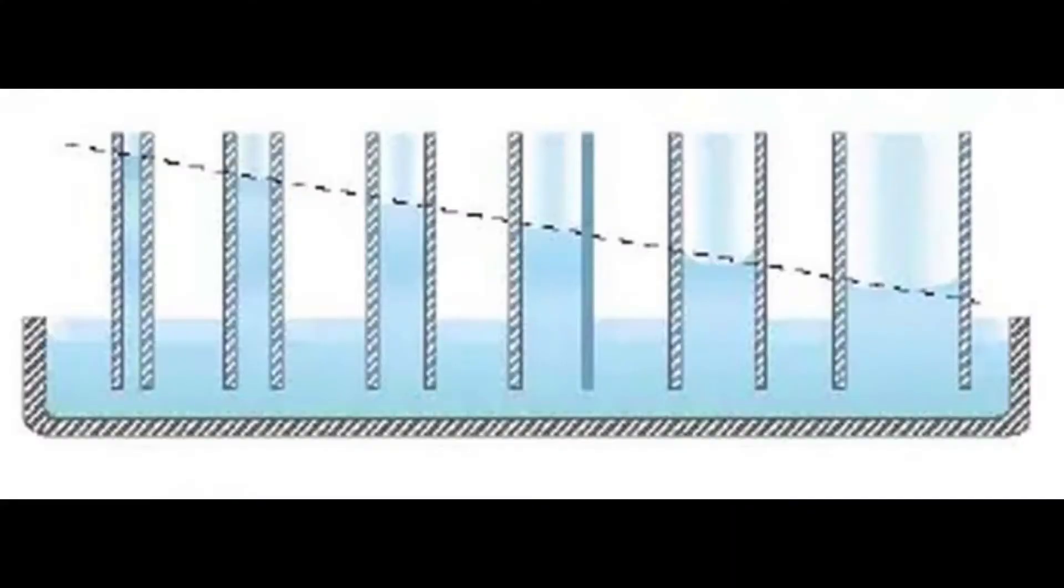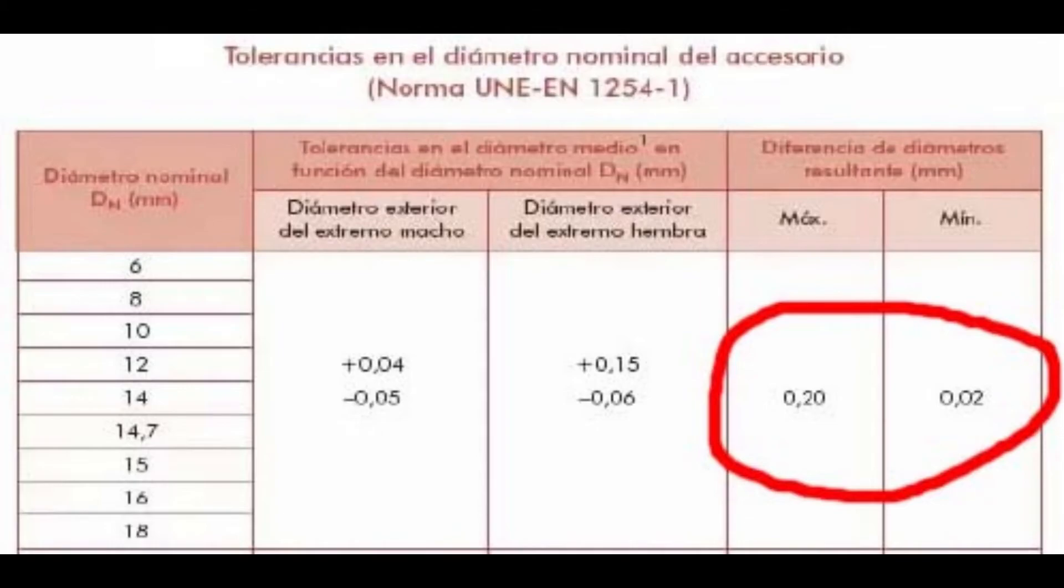However careful we may be, and even if the tool has an alignment bit, swaging can produce crooked fittings. For soft solder and hard solder to flow well by capillarity between the walls of the pipe and the fitting, that space must be very uniform, quite precise. And the tolerance allowed is very small.